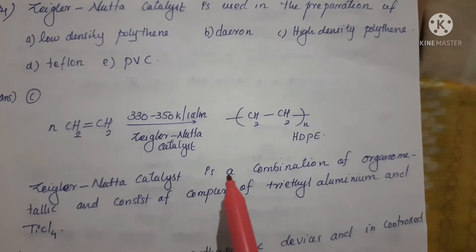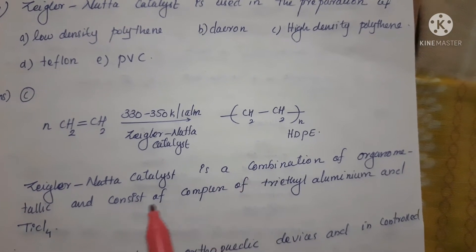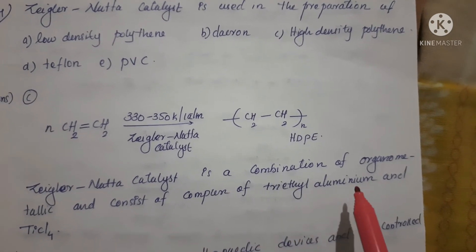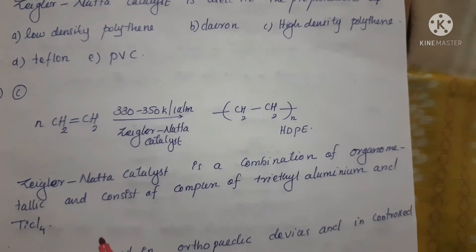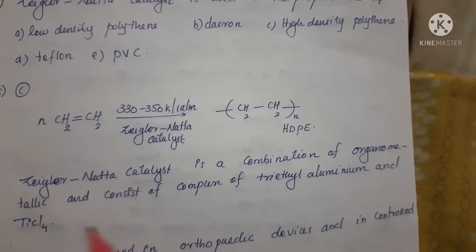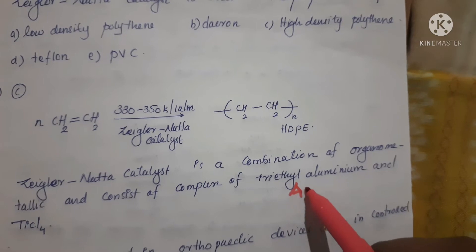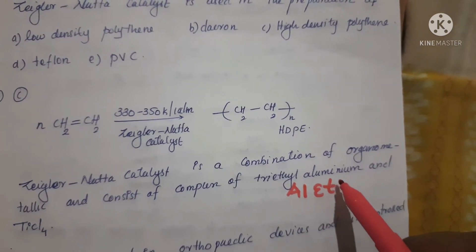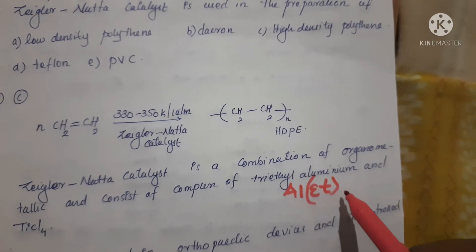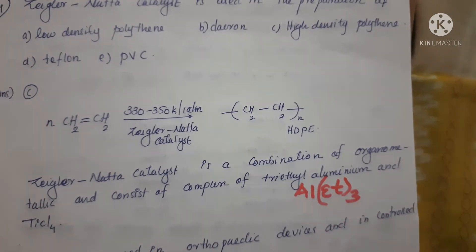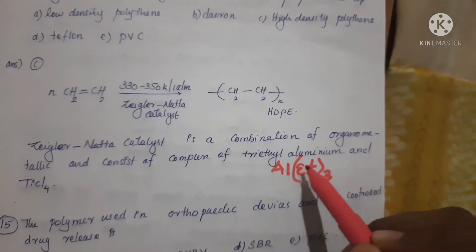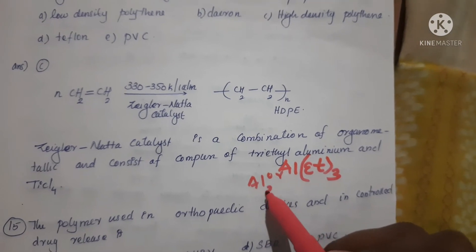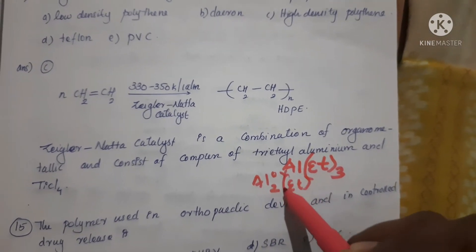Ziegler-Natta catalyst is a combination of organometallic compounds and consists of a complex of triethyl aluminum and titanium tetrachloride - triethyl aluminum (C2H5)3Al or (C2H5)2AlCl or (C2H5)Al(C2H5)6.